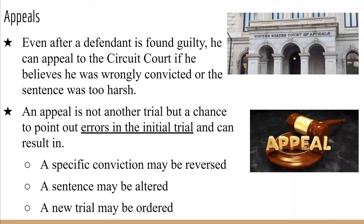Quite possibly the longest process for many criminals is the court of appeals. Even after a defendant is found guilty, they can appeal to the circuit court if they believe they were wrongly convicted or the sentence was too harsh. The appeal is not another trial, but a chance to point out errors in the initial trial — faulty evidence, a biased jury, or other reasons the trial was unfair. The appeals court might reverse a conviction, alter the sentence, or order a new trial, depending on the situation.